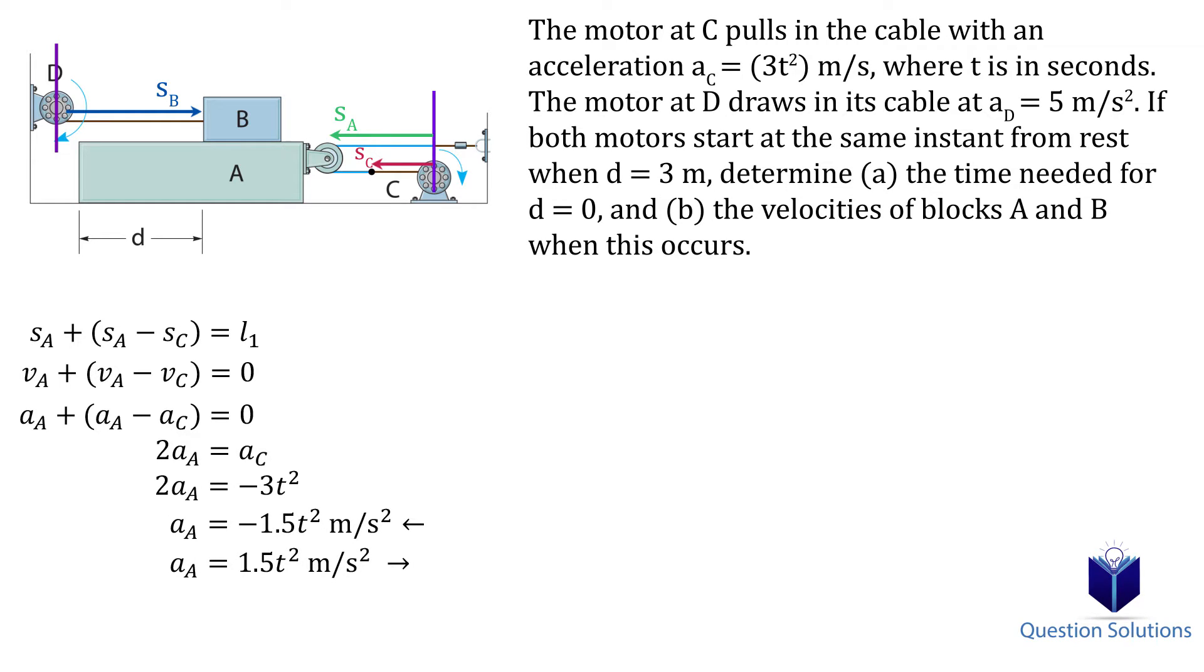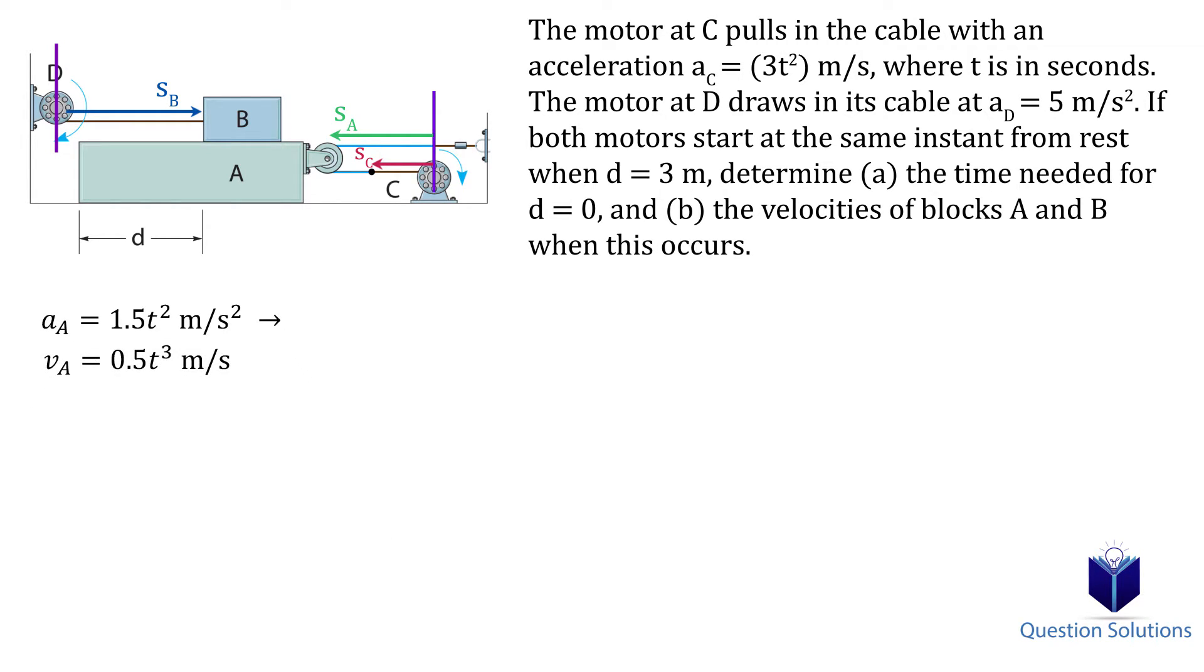Now that we have the acceleration of A, we can take the integral to get the velocity which is 0.5t cubed. Taking the integral once more gives us the displacement equation which is 0.125t to the power of 4. All this means is that the block is moving a certain distance with respect to time and it's represented by the equation we just found.